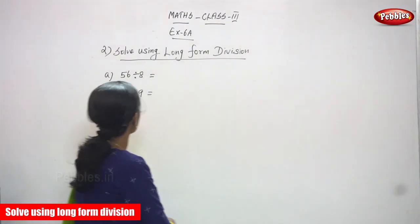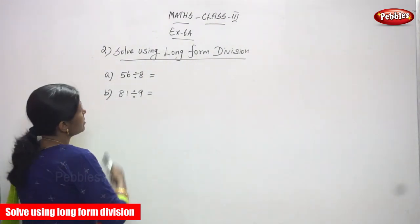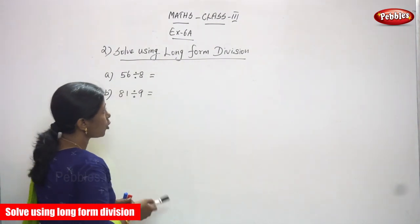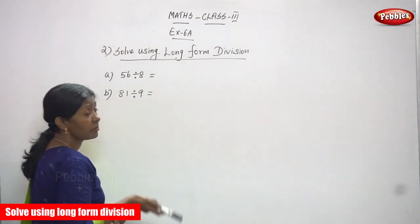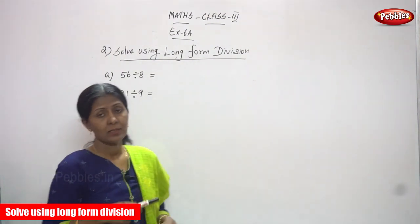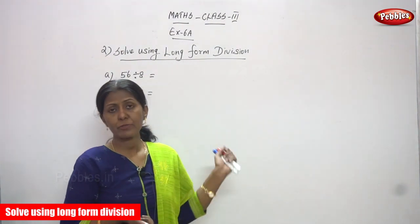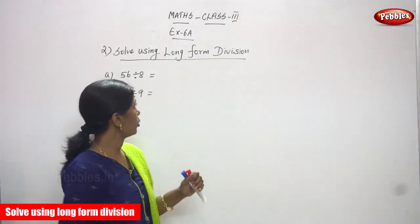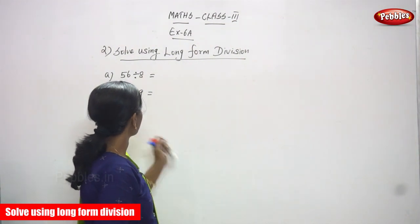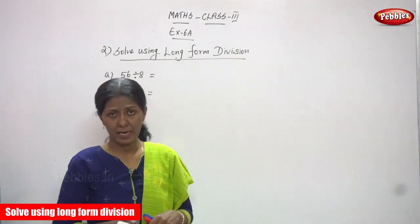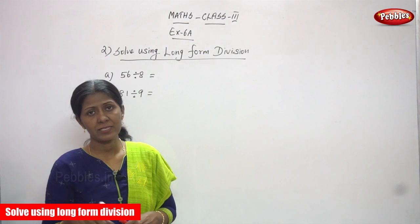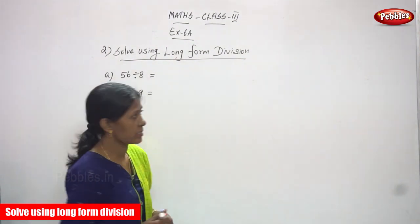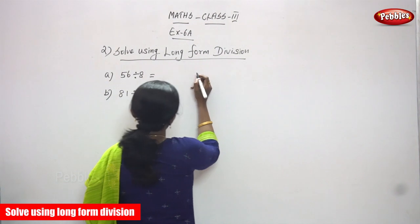Now we are going to do the second subdivision: solve using long form division. First we have seen the short form division. Now we are going to see the long form division. The first sum is 56 divided by 8. Let's start the class.